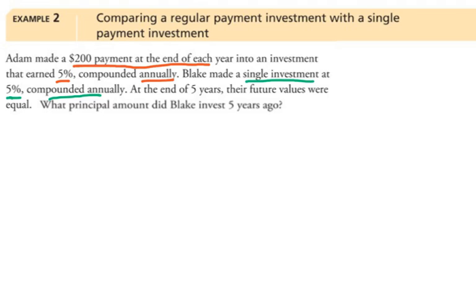So in order to do that, we need to know how much their investments are worth at the end of this 5 years, which we can accomplish by looking at Adam's through the lens of an annuity. Once we know that, we can deal with Blake.